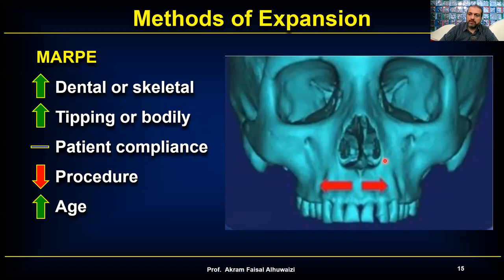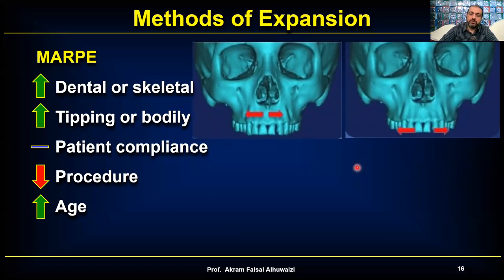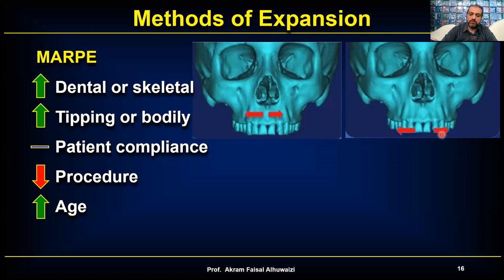The key difference with MARPE is that the expansion force comes from the micro-implants, which are at a higher level than in conventional Hyrax, SARPE, or RPE — where forces act at the level of the teeth. With MARPE you go much higher, closer to the bones of the skull, producing more horizontal fracture pattern rather than a pyramidal type.